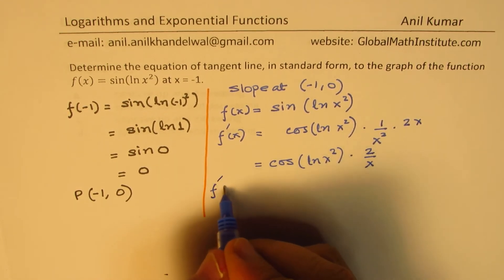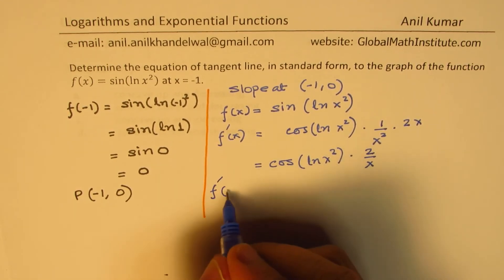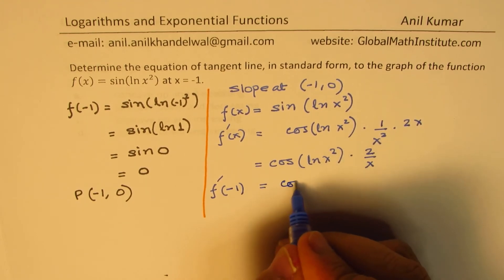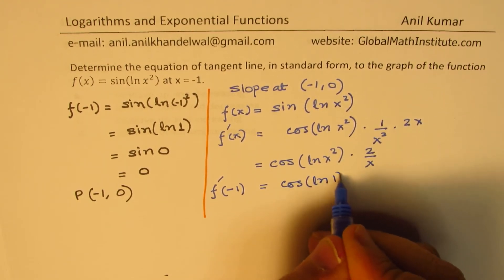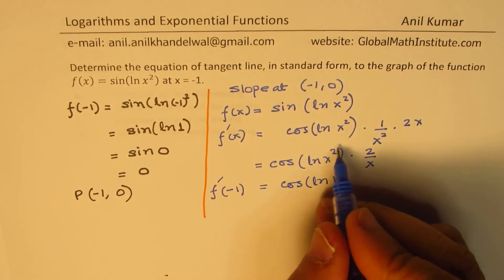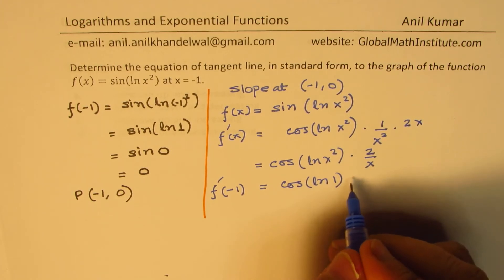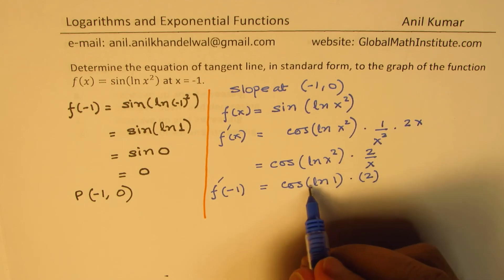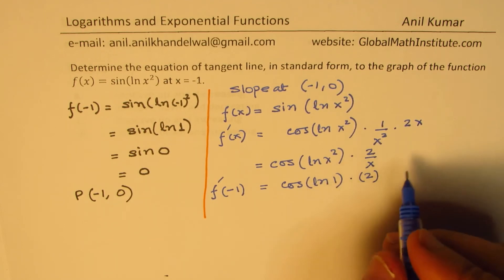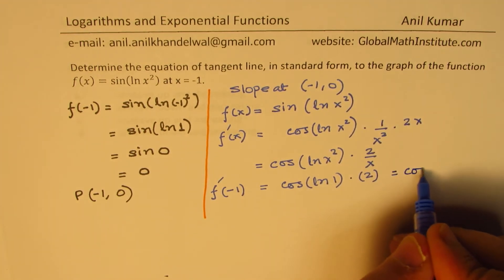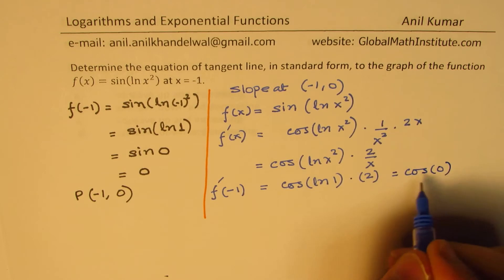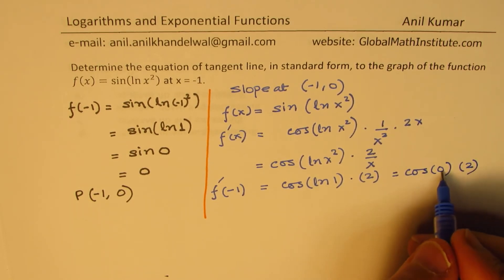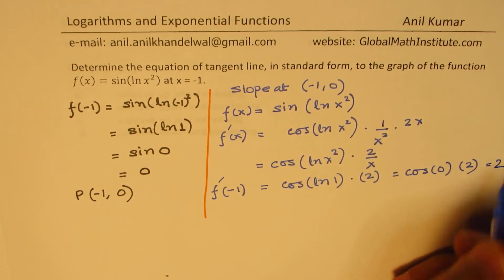The slope at x equals minus 1: substituting, we get cos of ln(1) times 2 over minus 1, giving cos(0) times 2. Since ln(1) is 0 and cos(0) is 1, we get the slope equal to 2.